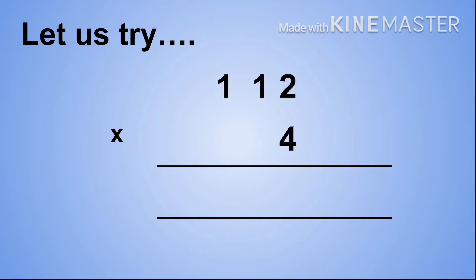Step 1: we need to times our multiplier, which is 4, by our unit, which is 2. So 2 times 4 equals 8. Step 2: we have to times our multiplier 4 by our tens digit 1. Therefore 1 times 4 equals 4.